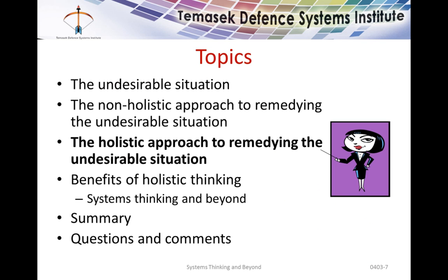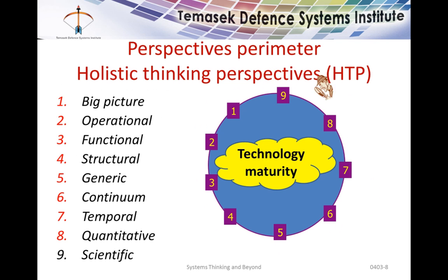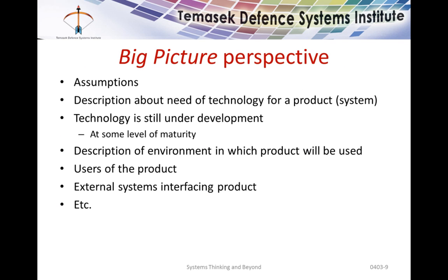Let's take a look at the holistic approach to remedying the undesirable situation. We look at the situation from the perspectives on the perimeter of holistic thinking. From the big picture perspective, we document the assumptions, the description of the need for the technology, what it is going to do, the fact that the technology is still under development at some level of maturity, the environment in which the product system will be used, who the users are, and the external systems interfacing with the product.